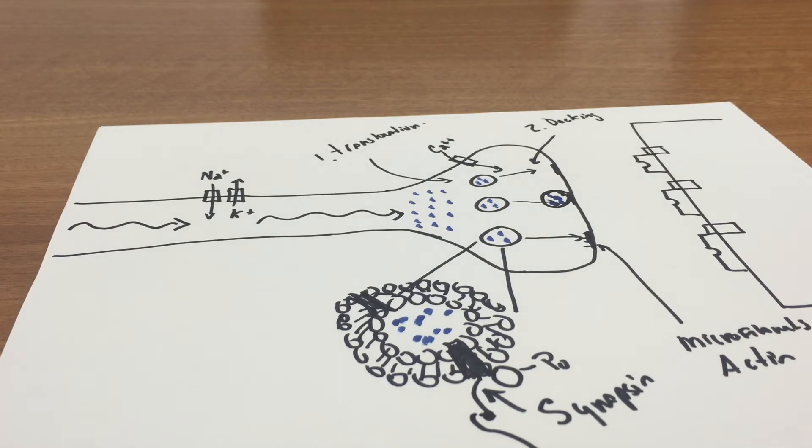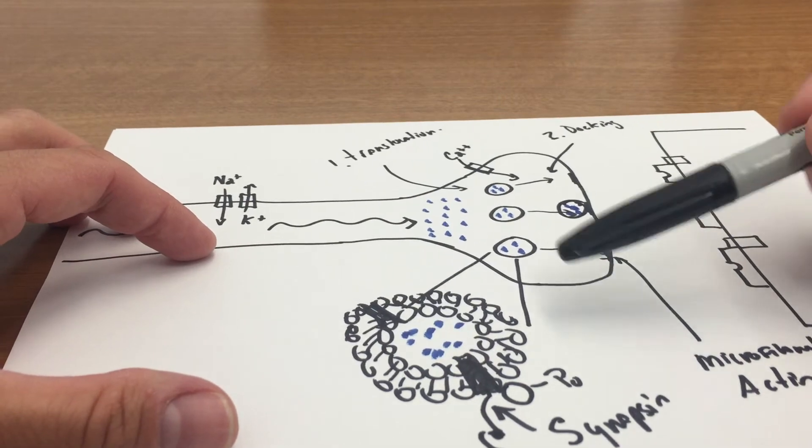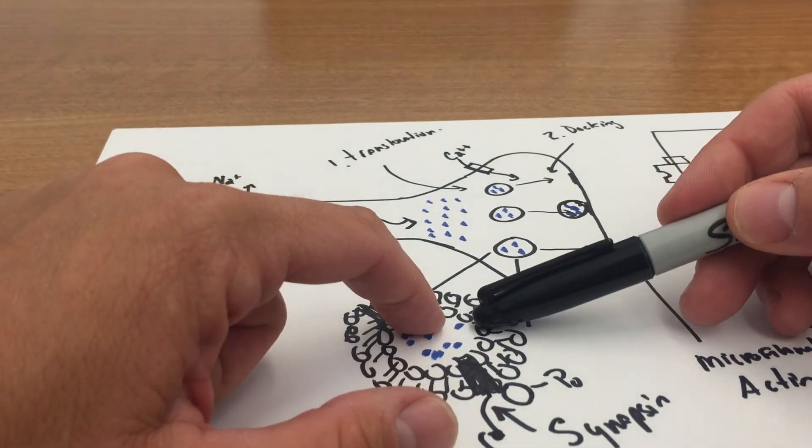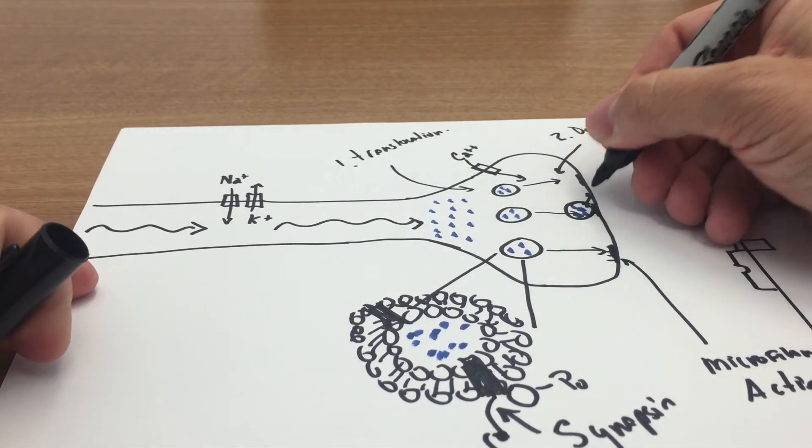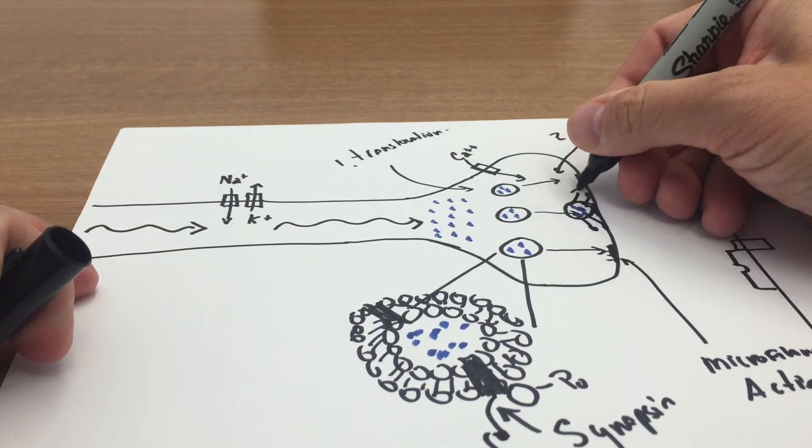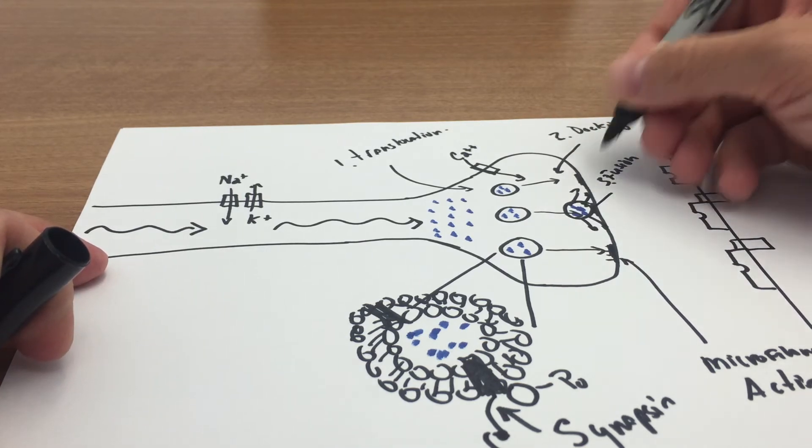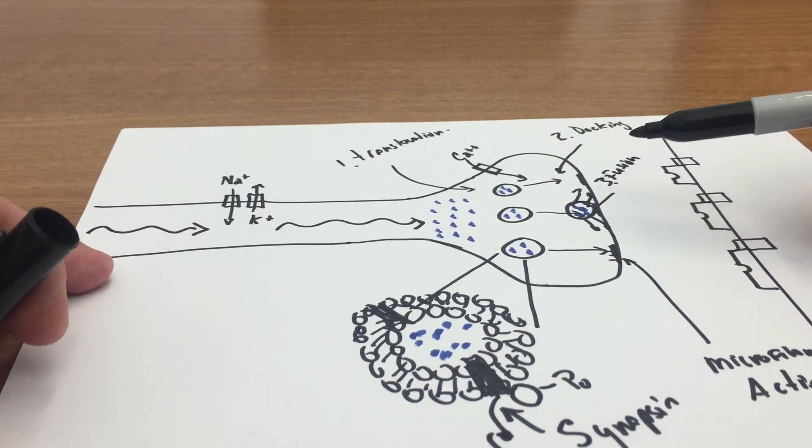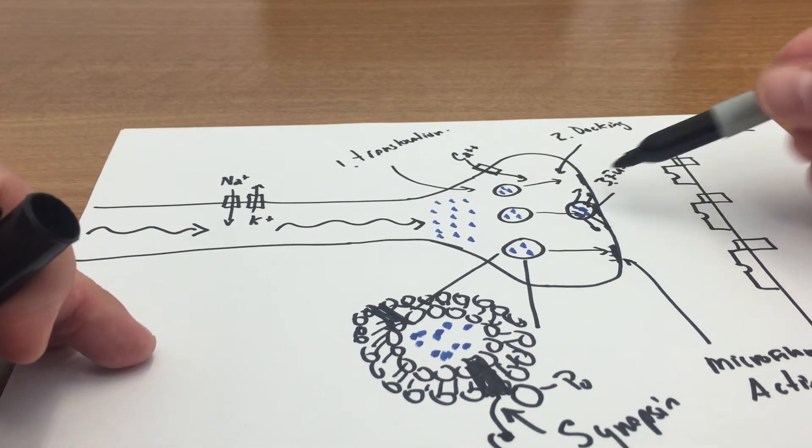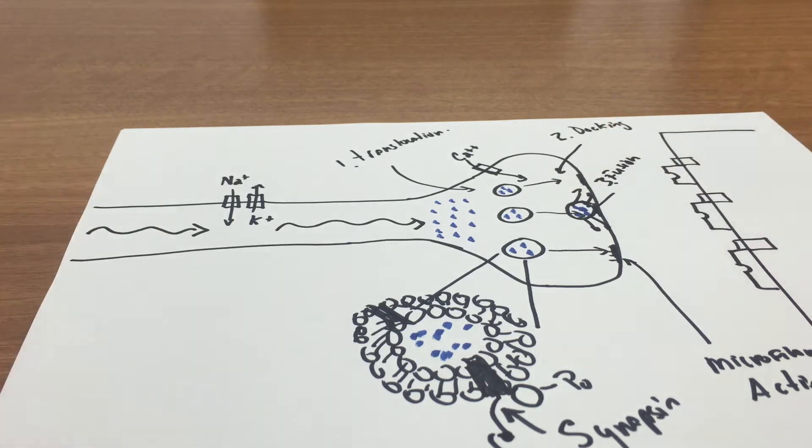Then once you have docking, then what will happen is this will fuse. It'll dock to the cell membrane, and then the membrane will actually fuse into, so that's step three is this fusion. It'll fuse itself into the membrane, and then once it fuses into the membrane, the vesicle kind of dissolves away, it opens up.